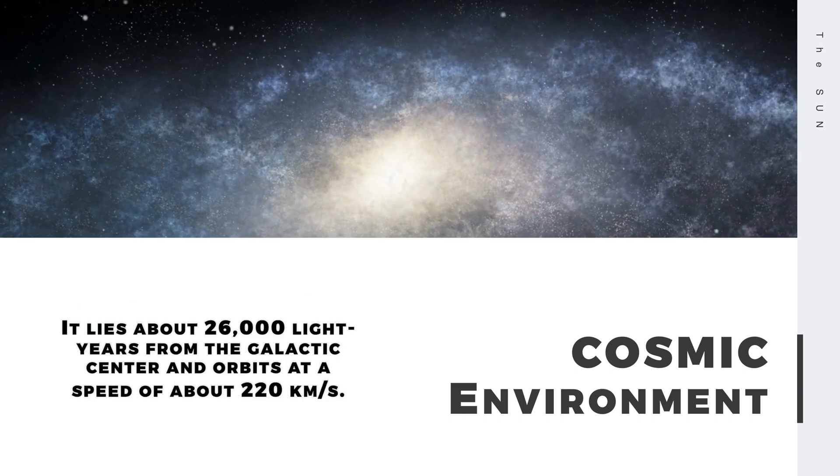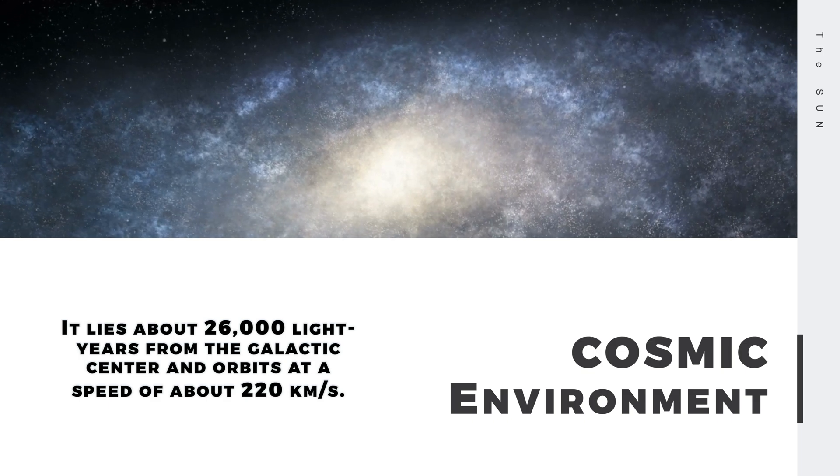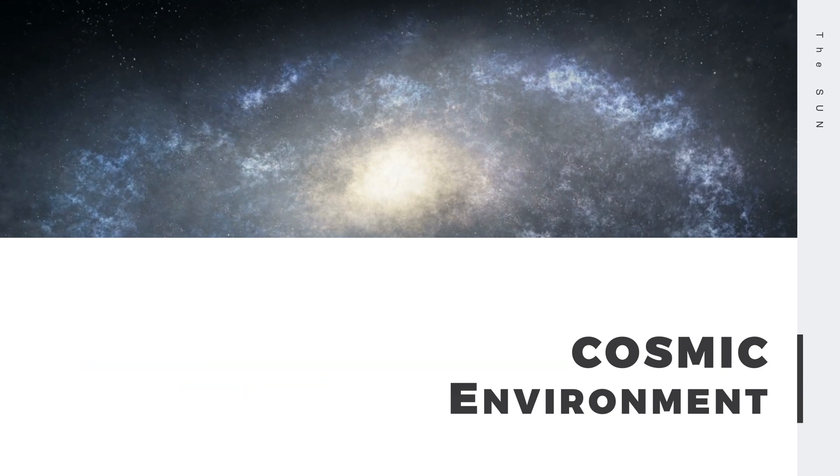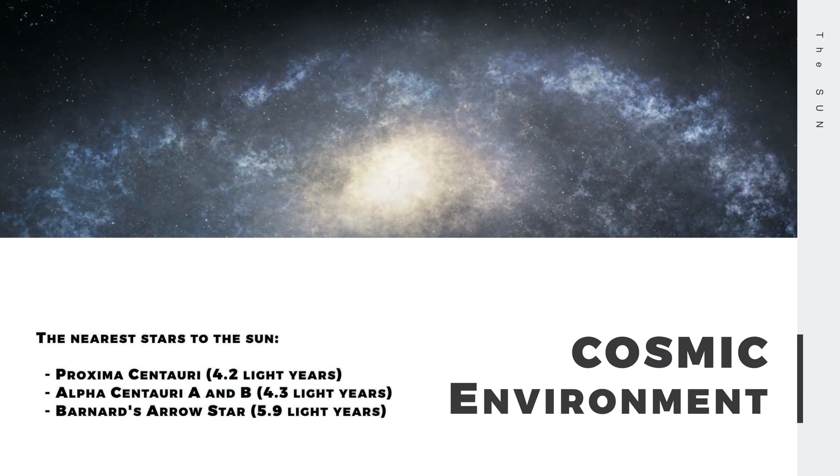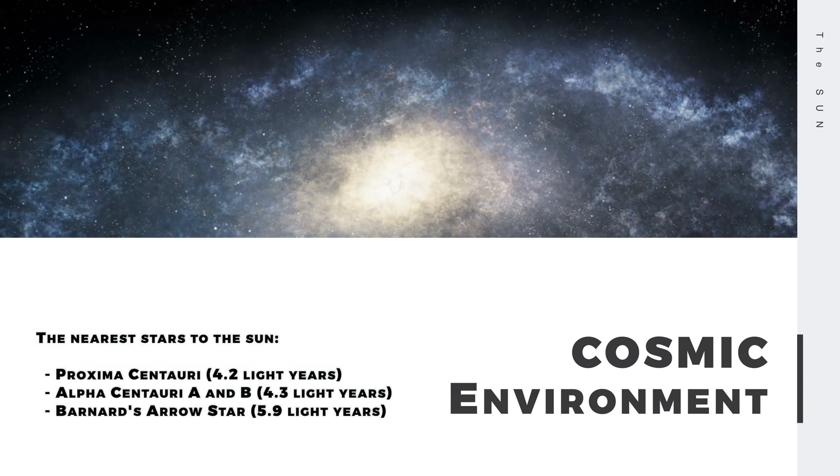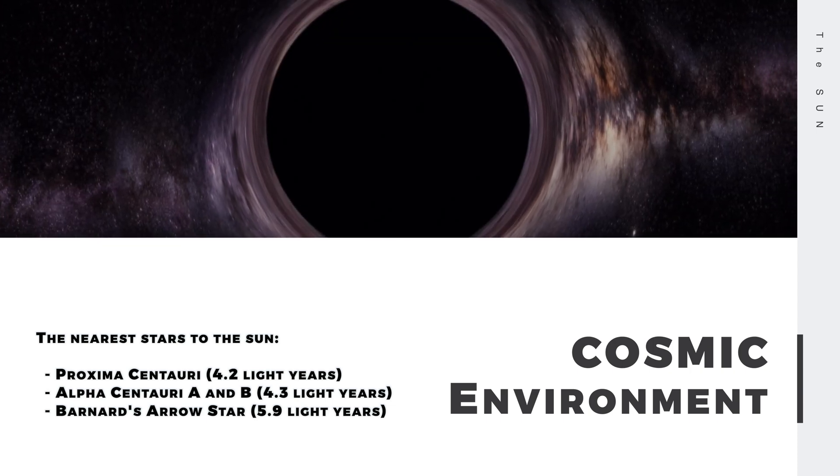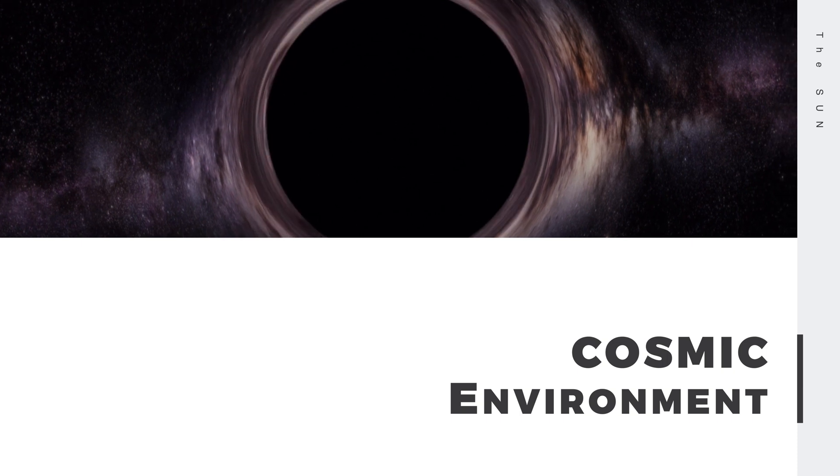It is located about 26,000 light-years from the galactic center and orbits it at a speed of about 220 kilometers per second. The nearest stars to the Sun are Proxima Centauri, 4.2 light-years, Alpha Centauri A and B, 4.3 light-years, and Barnard's star, 5.9 light-years.